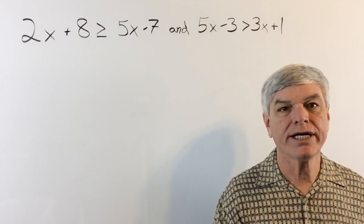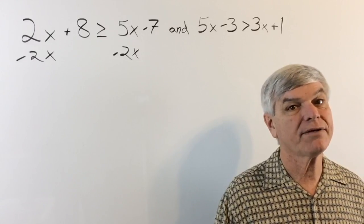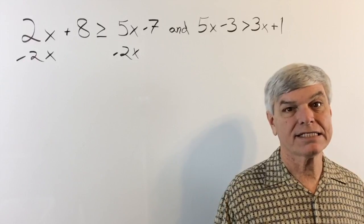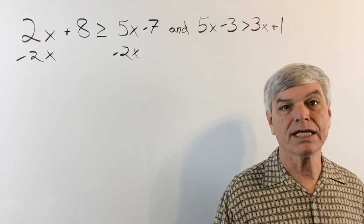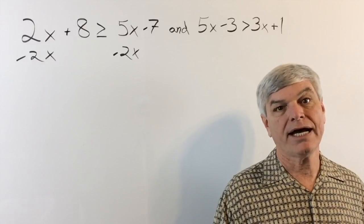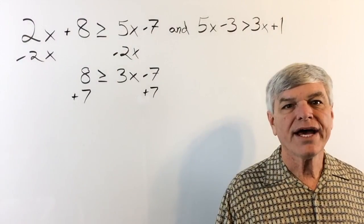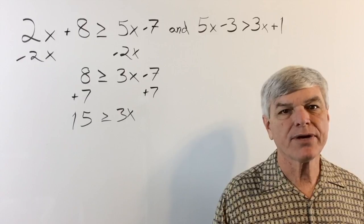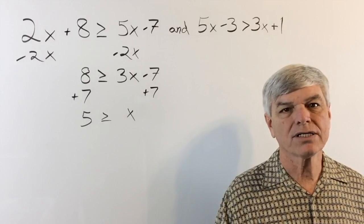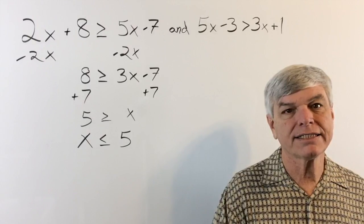Let's work on the first equation. I'm moving the x values to the right-hand side to keep them positive — you can keep them on the left and end up with a negative value, then multiply by negative 1, but I like to keep x positive. Bring the negative 7 to the other side, divide both sides by 3, and that isolates x giving 15 over 3 equals 5. Since x is on the wrong side, flip the equation — and when we flip, the inequality sign also flips — so x is less than or equal to 5.